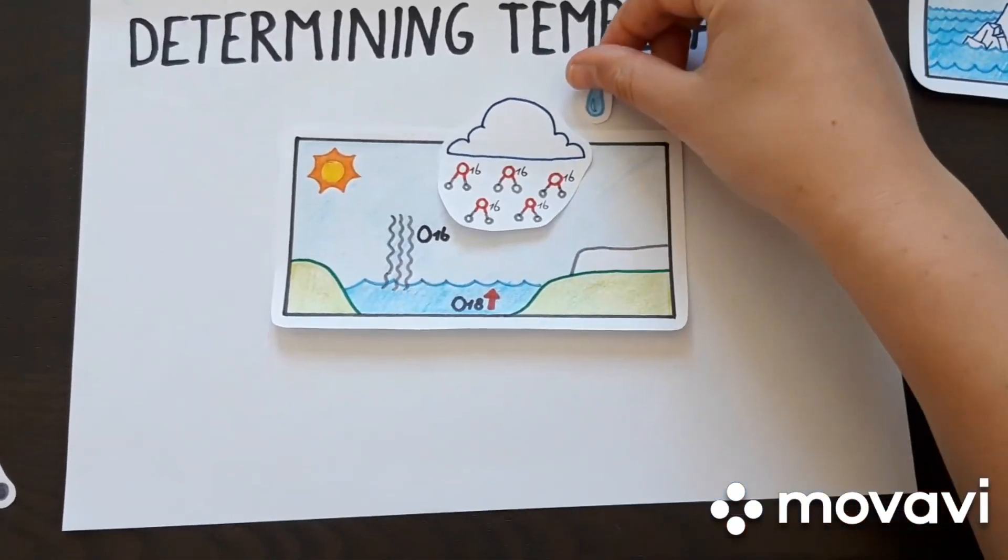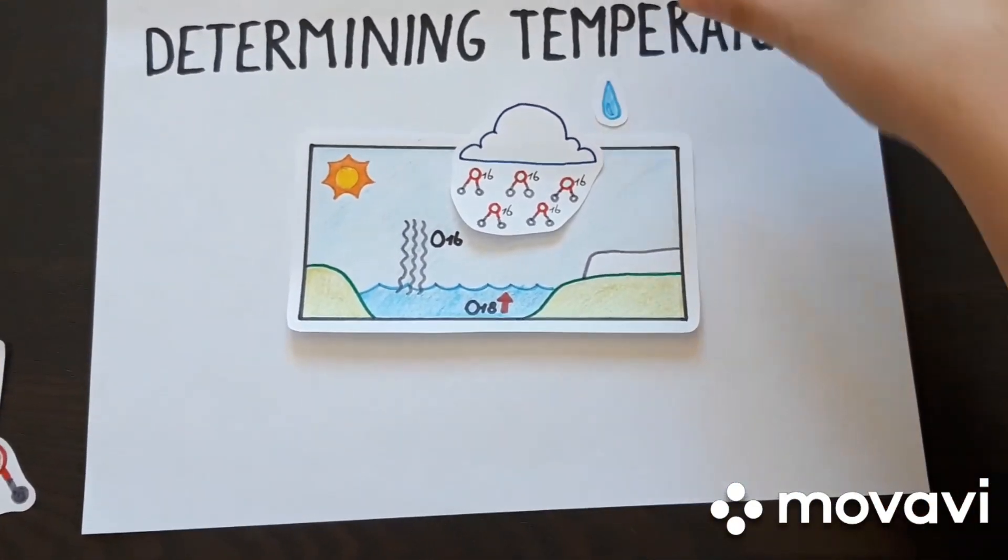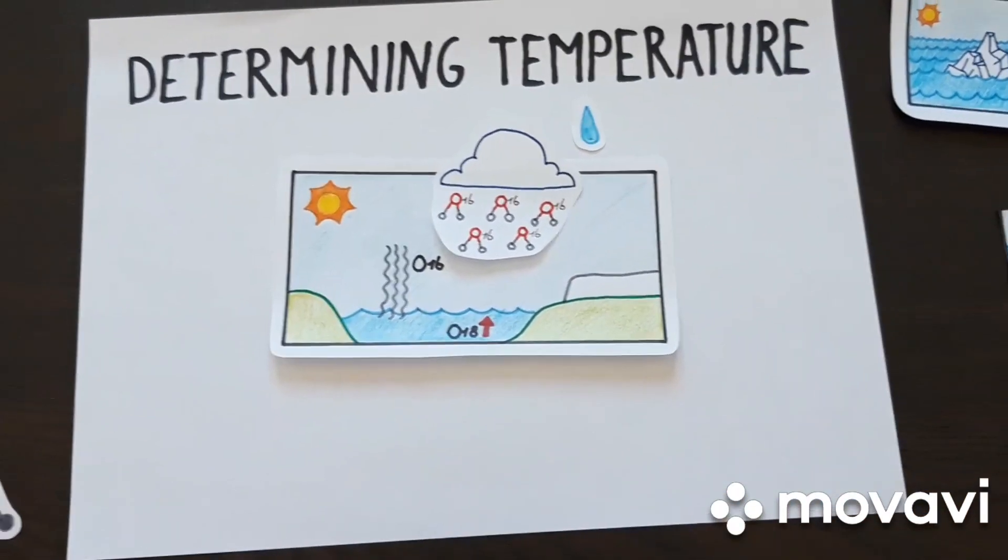During warm periods, water rains out with the light oxygen isotope, so that it finally returns to the ocean and thus restores balance.